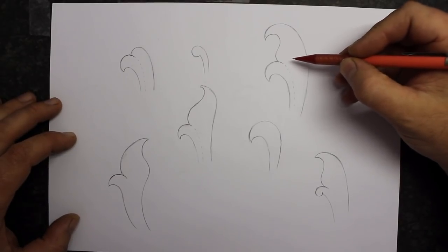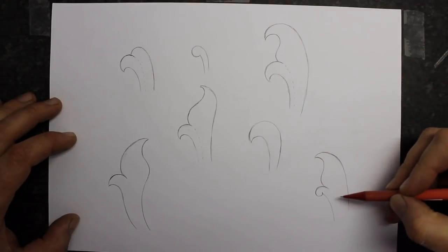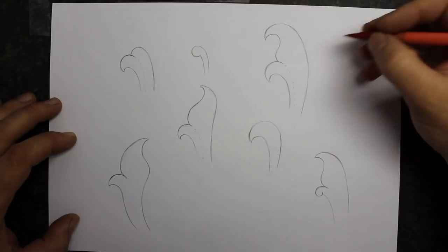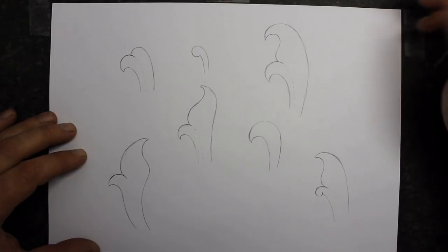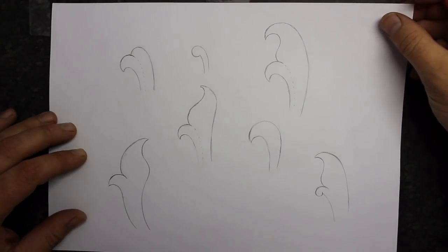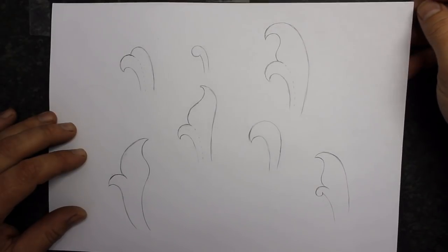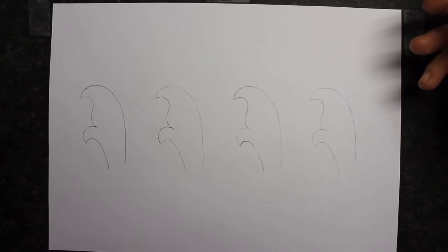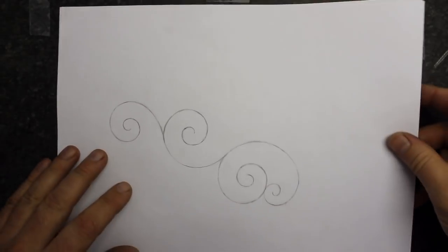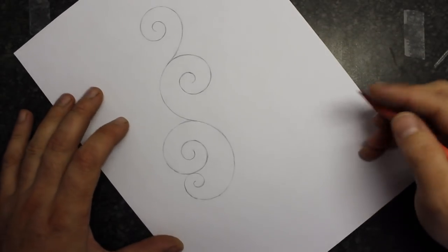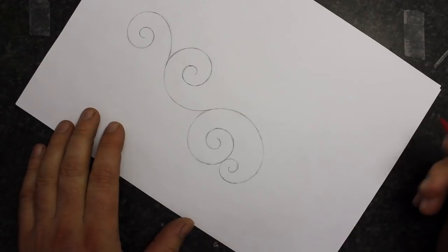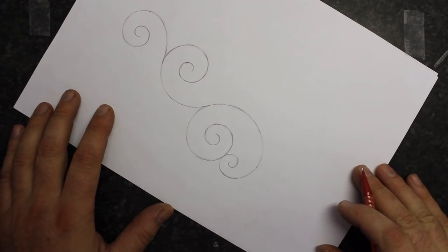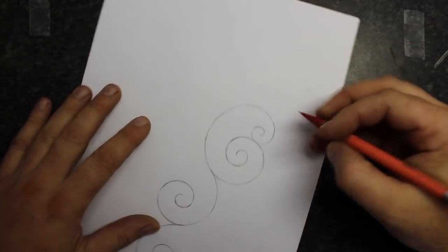This is just a few simple scroll designs or leaf designs that can be done. You can do your own variations on these. Experiment a bit, see what works for you. Let's go ahead now and add some leaves to a pre-drawn spiral design. It's okay to turn your paper if you need to. You can move it around as you need to when you're drawing. You don't need to keep the paper stationary. Turn the paper as needed.